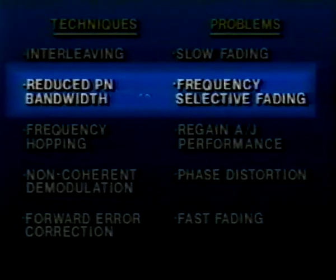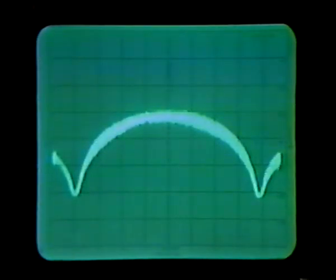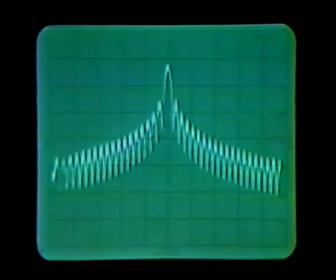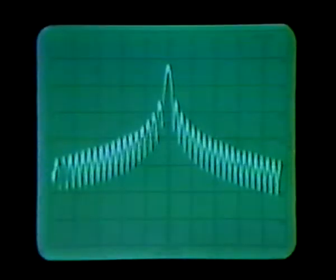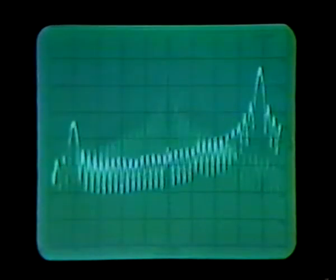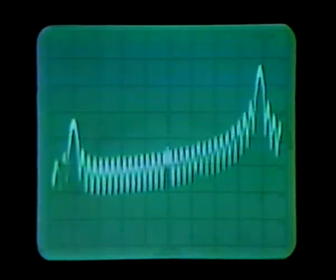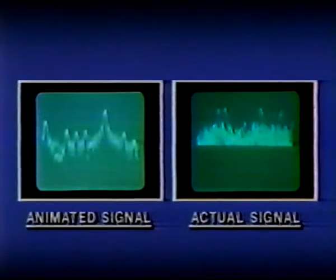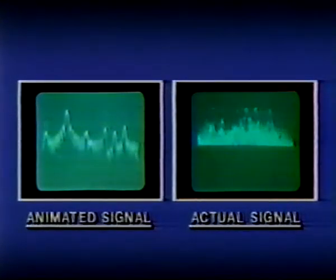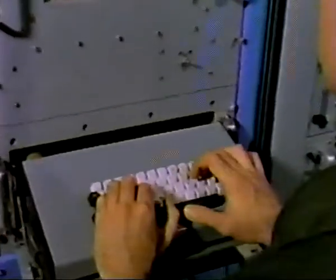Reduced PN bandwidth: frequency selective fading is combated by narrowing the USC-28 spread spectrum bandwidth. Frequency hopping: a modified single sideband modulator produces a pseudo-random offset frequency. As this offset frequency changes, the spread spectrum moves accordingly, thus producing a pseudo-random hopping pattern. The reduced spread spectrum carrier will hop across the original bandwidth to regain AJ performance lost due to narrowing the spread spectrum bandwidth.